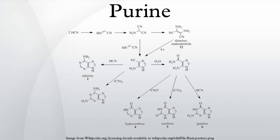A purine is a heterocyclic aromatic organic compound. It consists of a pyrimidine ring fused to an imidazole ring. Purines, which include substituted purines and their tautomers, are the most widely occurring nitrogen-containing heterocycle in nature.